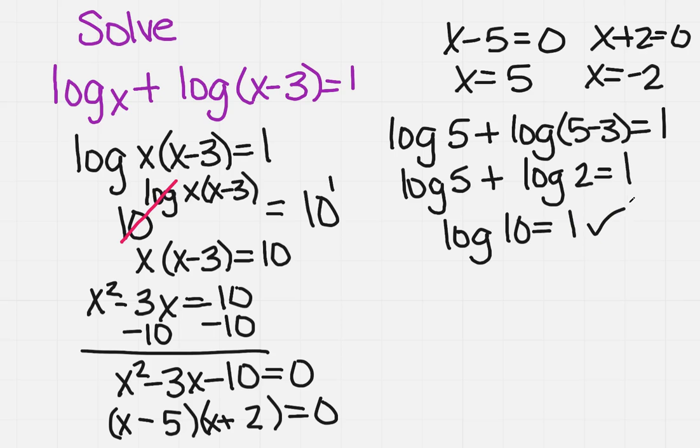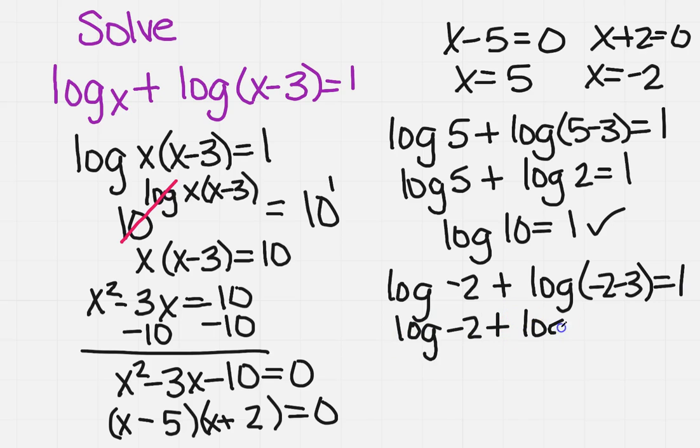Now, if I do the other number, I would have the log of minus 2 plus the log of minus 2 minus 3 equals 1. And then I would have the log of minus 2 plus the log of minus 5, which equals 1.